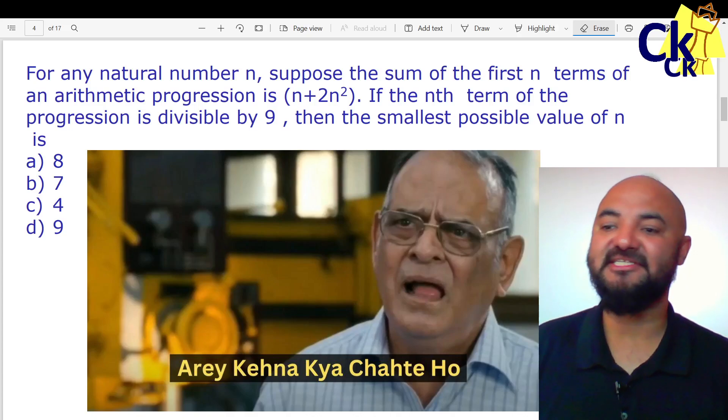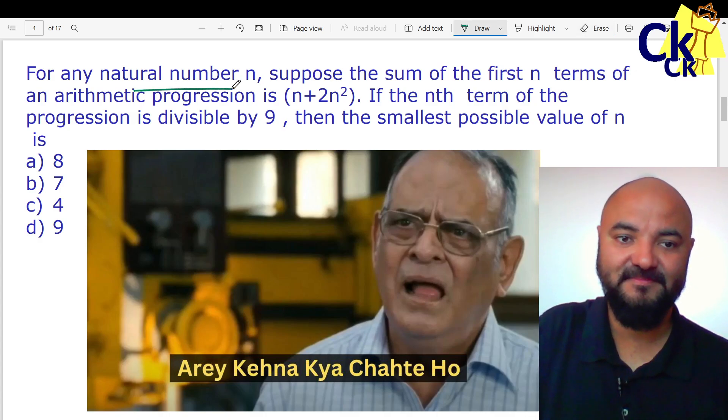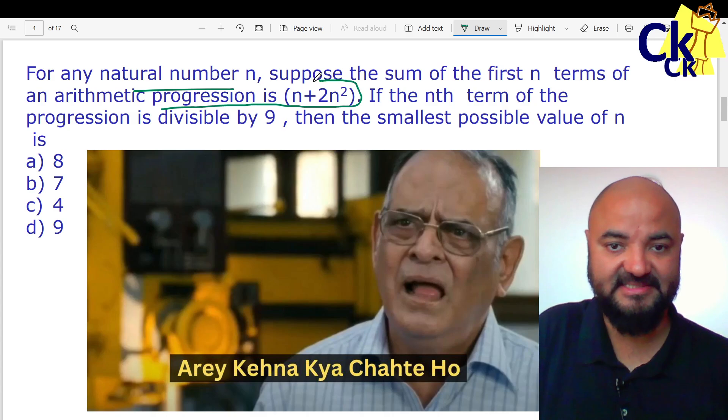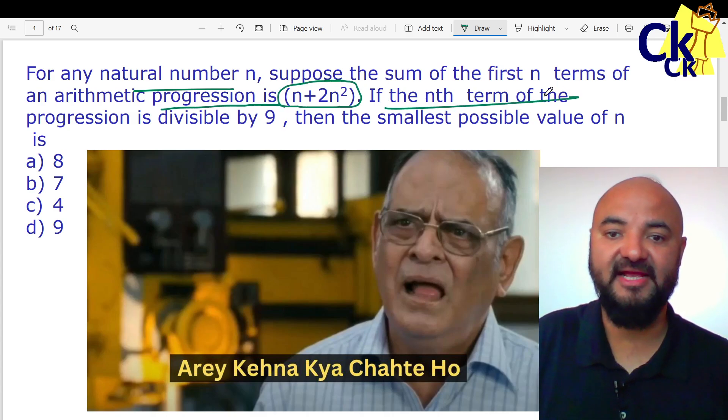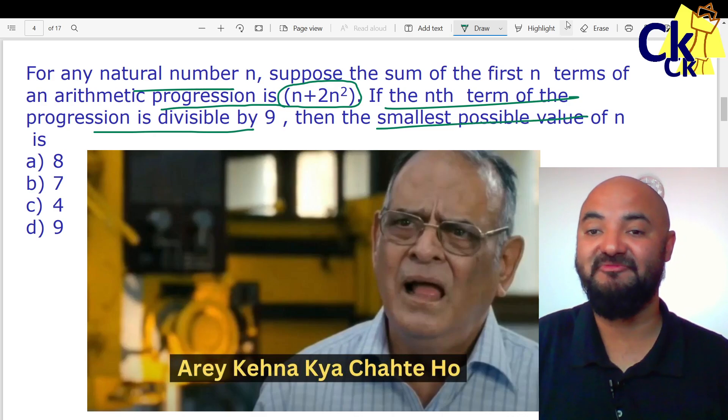Hello guys, let us look at this CAT 2022 question. For any natural number n, suppose the sum of the first n terms of an AP series is (n+2n²). If the nth term of the progression is divisible by 9, find the smallest possible value of n.